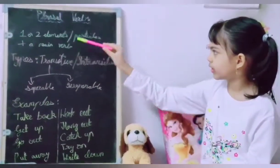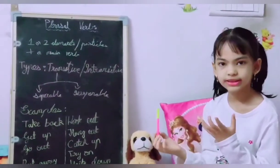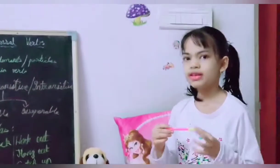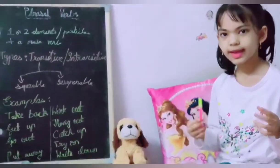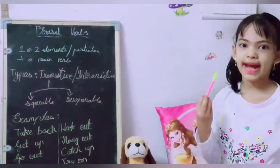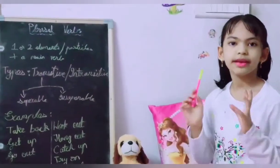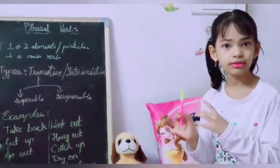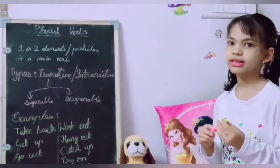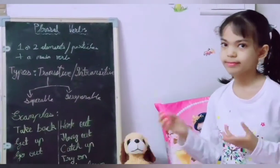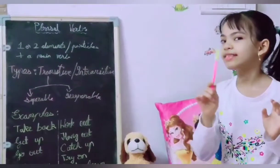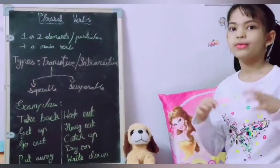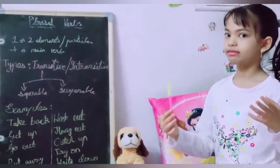They contain one or two elements that are also called particles, plus a main word. These one or two particles can be either prepositions or adverbs. In adverbs we can say 'give up.' Give up means to stop something, but when we say 'never' in front of it, it means we are going to continue something — like in the example 'never give up learning English.' And in prepositions we can say 'wish for' — I wish for new shoes.